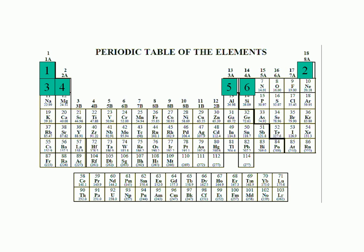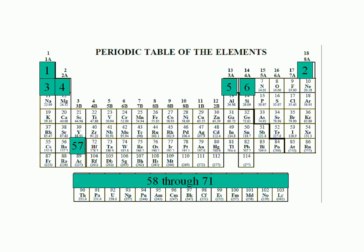Note that there is a break in the numbering once you get to lanthanum, which is number 57. Elements with atomic numbers 58 through 71 are typically shown below — these elements are called the lanthanides. The numbering resumes with hafnium, number 72.